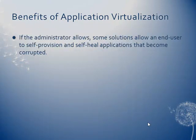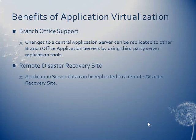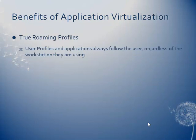If the administrator allows, some solutions allow end users to self-provision and self-heal applications that become corrupted. I mentioned the branch office support, so you can replicate changes to branch offices. It's also a really nice solution for DR if you need to recover apps very quickly. Under duress, it's going to be much easier if you have an application virtualization solution in place because you don't have to physically install the applications on every workstation. You also have true roaming profiles — since the applications aren't installed, they can roam wherever the user roams.